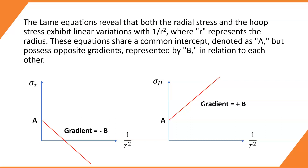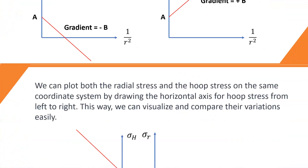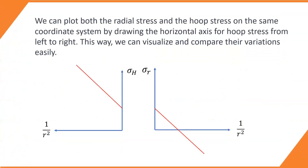We can show these stresses graphically. We can plot both the radial stress and the hoop stress on the same coordinate system by drawing the horizontal axis for hoop stress from right to left. This way, we can visualize and compare their variations easily.